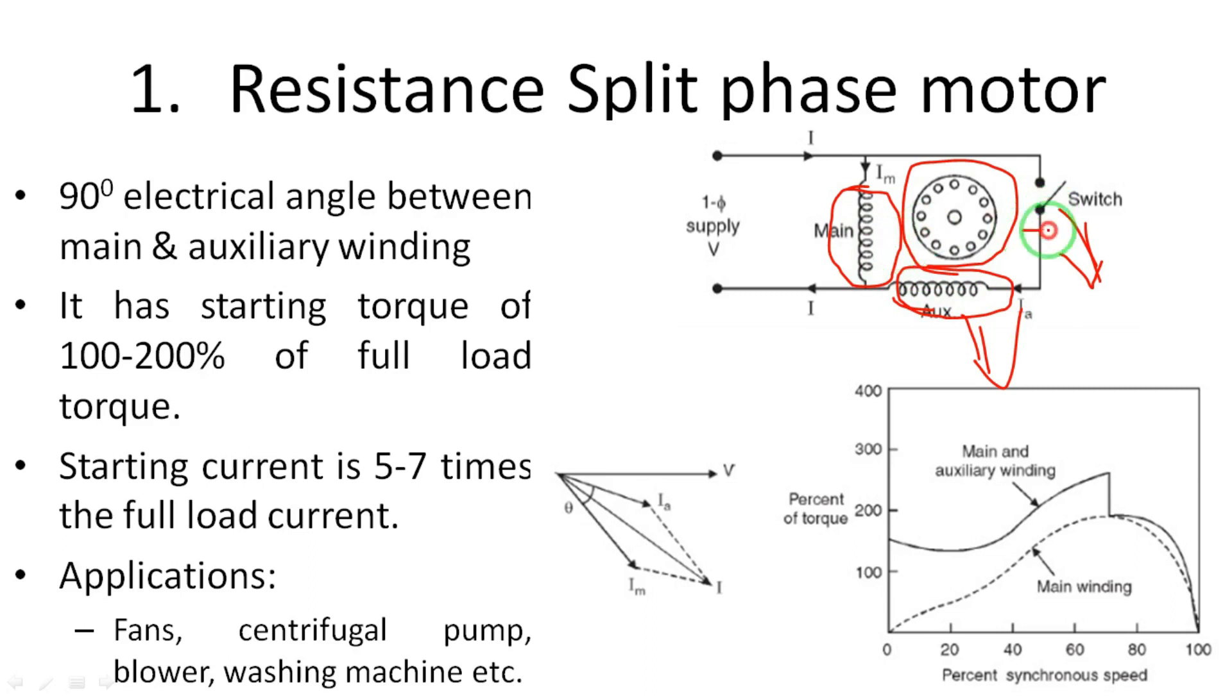In the starting purpose I am using the switch. When the machine is started, the switch will automatically turn off. The main point is we have to maintain 90 degrees electrical angle between the main and auxiliary winding.